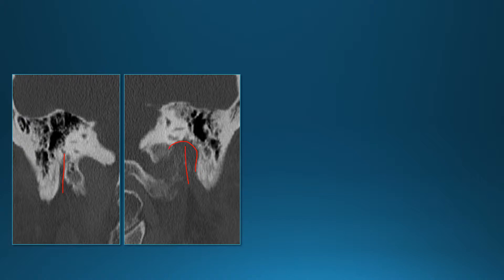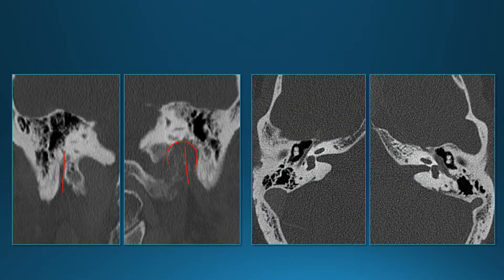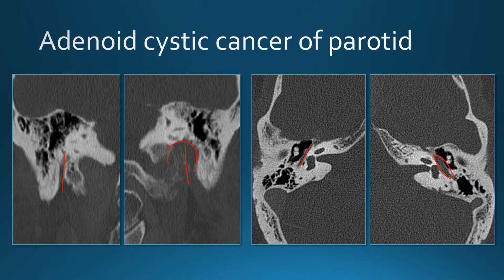The tympanic segment of the facial nerve canal is also very wide compared to the normal right side. This patient has a tumor of the parotid gland that turned out to be adenoid cystic cancer, which has a very high propensity for perineural spread.